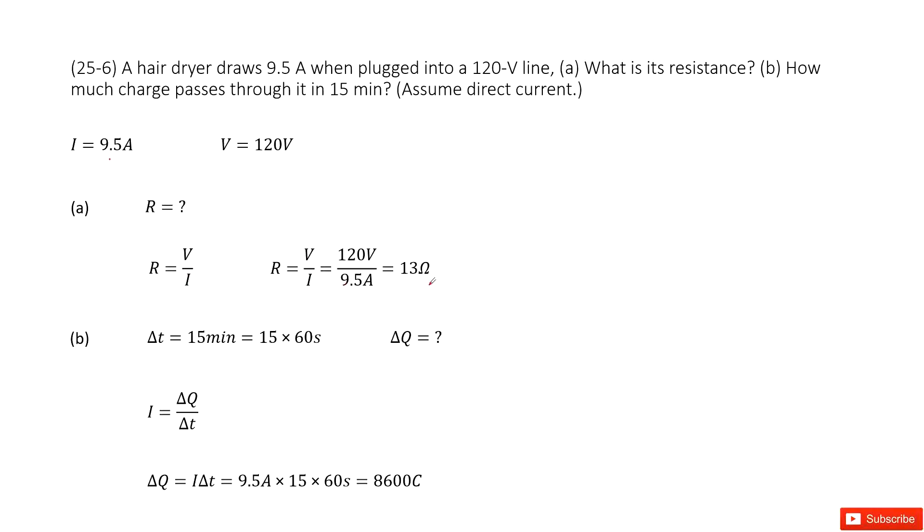The next question asks how much charge passes through the hair dryer in 15 minutes. We write down the given quantity: the time Δt equals 15 minutes. Converting the unit from minutes to seconds, we get 15 times 60 seconds.